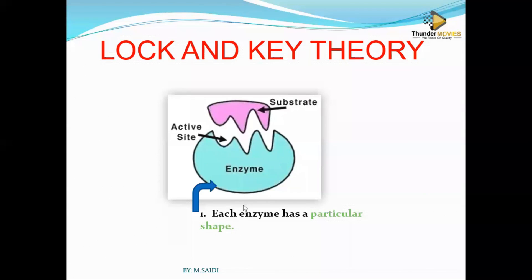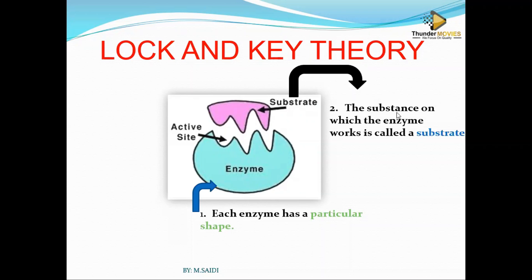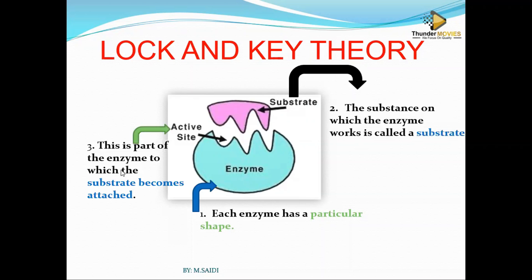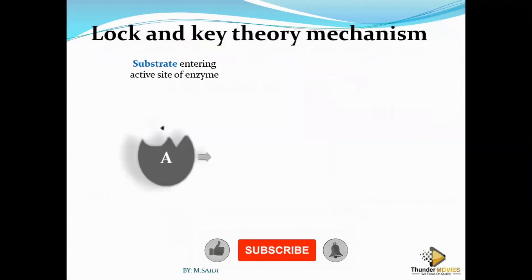Each enzyme has a particular, specific shape. The substrate — the substance on which an enzyme works — is called a substrate; we don't call it food in science. The active site is the part of the enzyme to which the substrate becomes attached. That's the small hole where the key is supposed to enter. You need to know how to label that and understand how the lock and key hypothesis works.